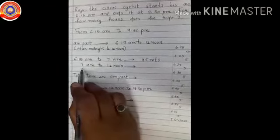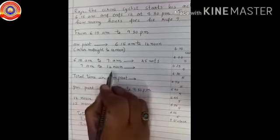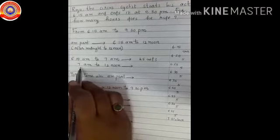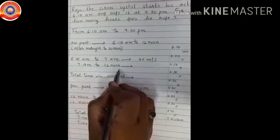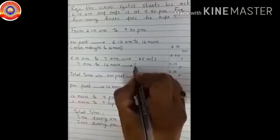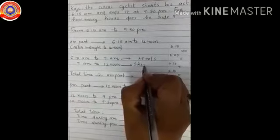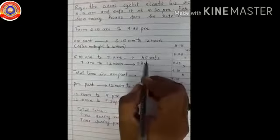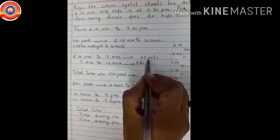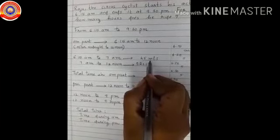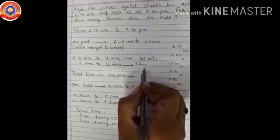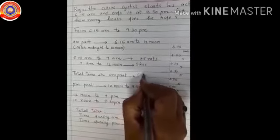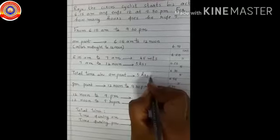Then let's find out 7am to 12 noon. How many hours are there from 7am to 12 noon? Yes, 5 hours are there. So the total time in the AM part is 5 hours 45 minutes.